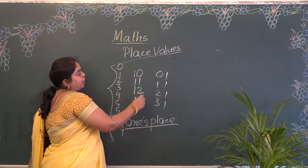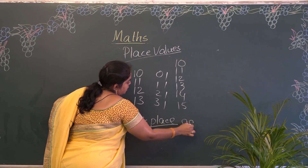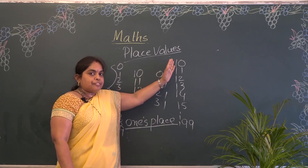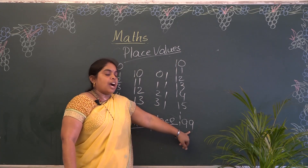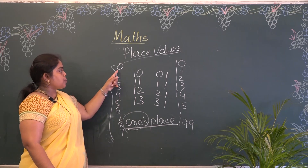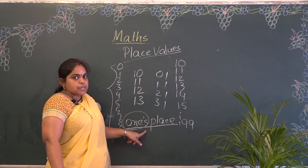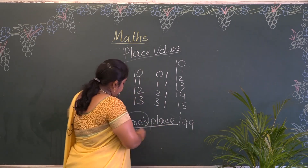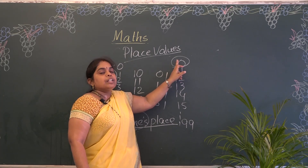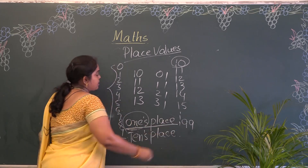After 9, we write 10, 11, 12, 13, 14, and so on till 99. 99 is the highest 2-digit number and 10 is the lowest 2-digit number. The first 2-digit number is 10, so the next place value is the tens place.